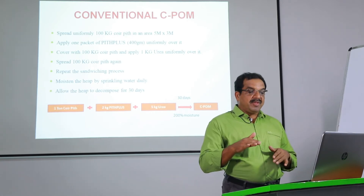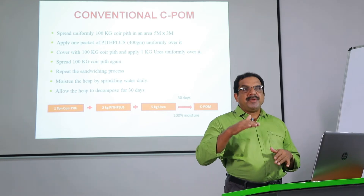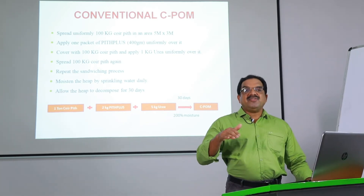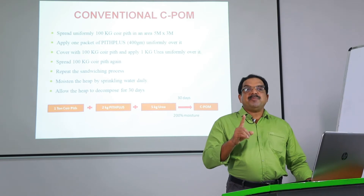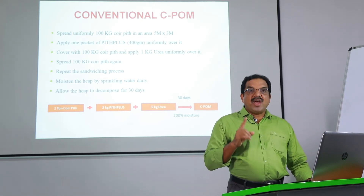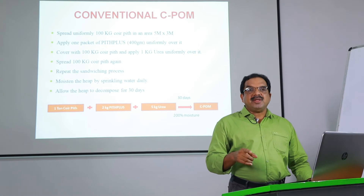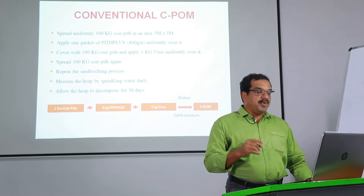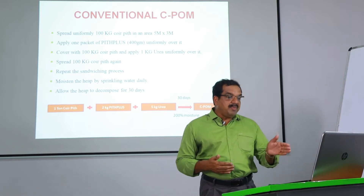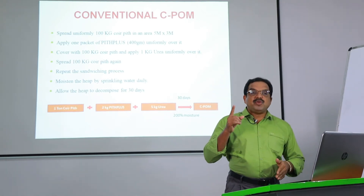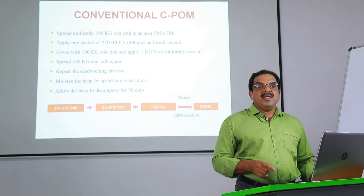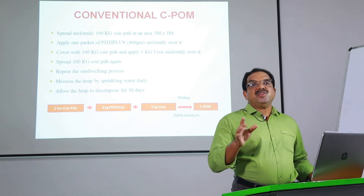Then the third layer is Pith Plus, the fourth layer is urea — you repeat this sandwiching process until the heap reaches a height of 1.5 meters, allowing up to 5 metric tons of coir pith in one heap. The basic formula is: 1 metric ton of coir pith plus 2 kg Pith Plus plus 5 kg urea. Then you have to maintain 200% moisture.